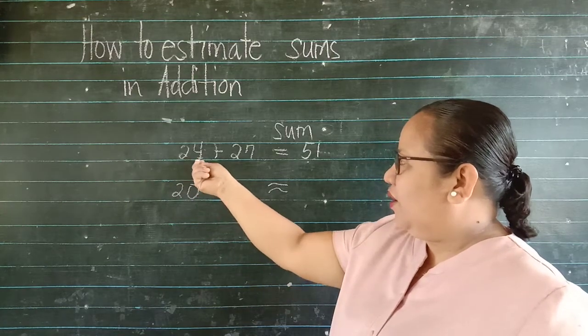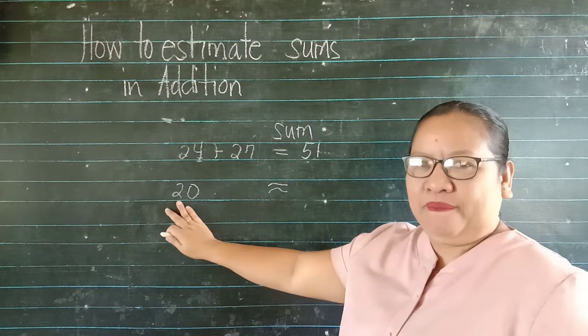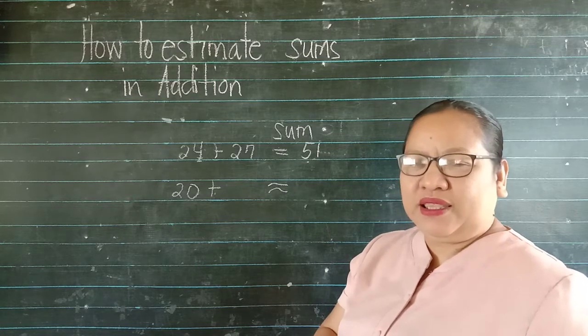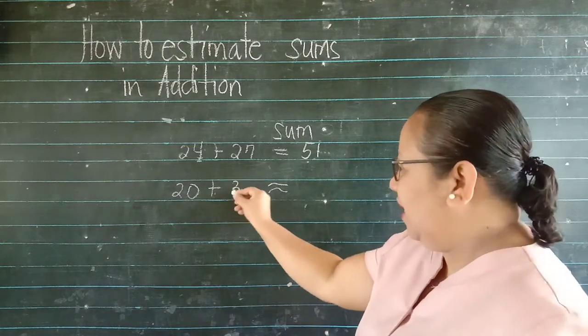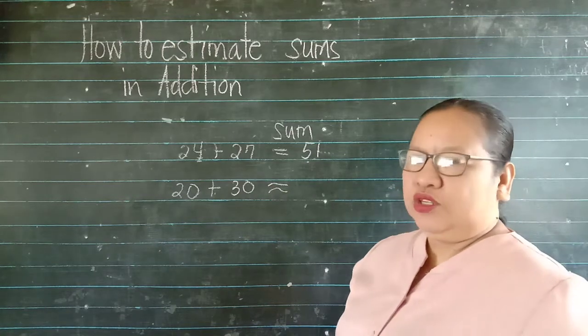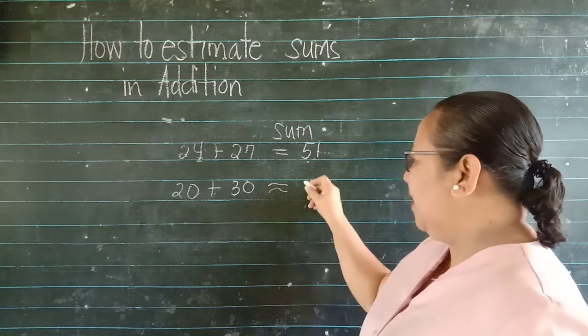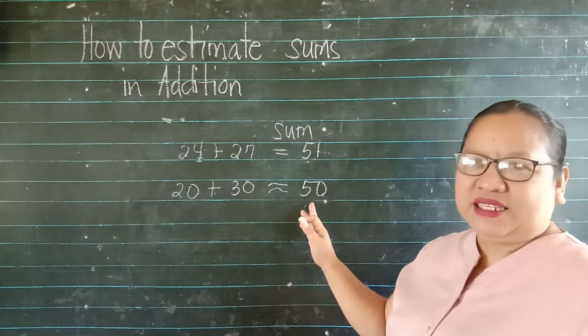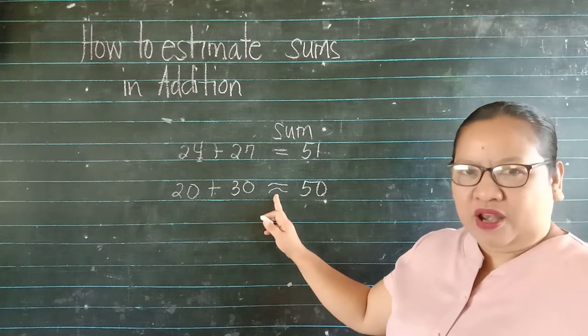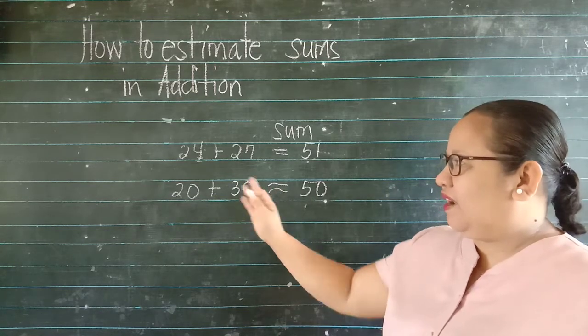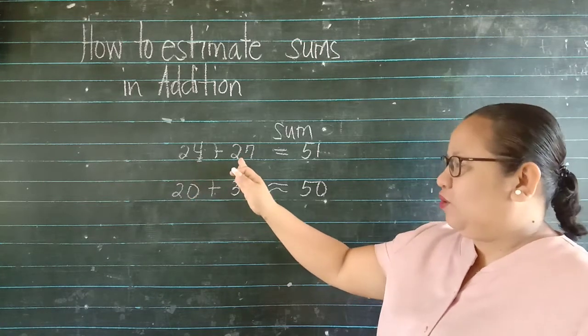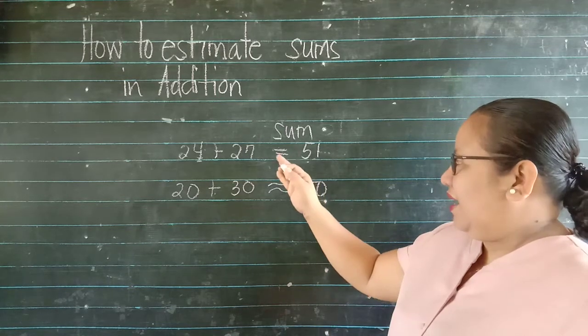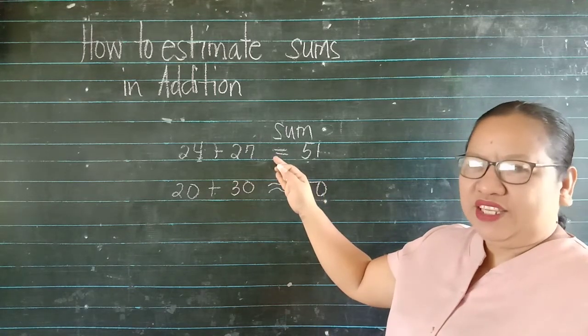Bakit po siya 20? 4. So, same. Plus 27. Magiging ano siya pag in-round off natin to the nearest tens? Very good. Magiging 30. So 20 plus 30 is 50. Ito po ang kanyang estimated sum. Ito ang ginamit na simbol. Kasi hindi po siya exact answer. Ang kanyang estimated sum. Ang kanya naman exact answer ay 51.